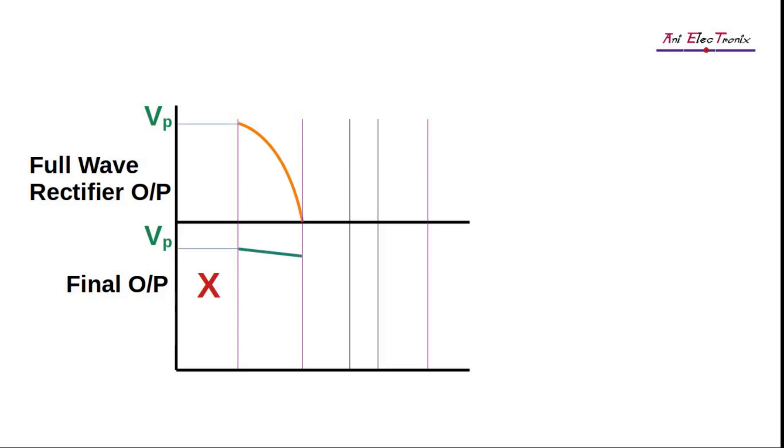As a result, the next half-cycle pulse from the rectified output appears at the capacitor's input, which initiates charging of the capacitor again.